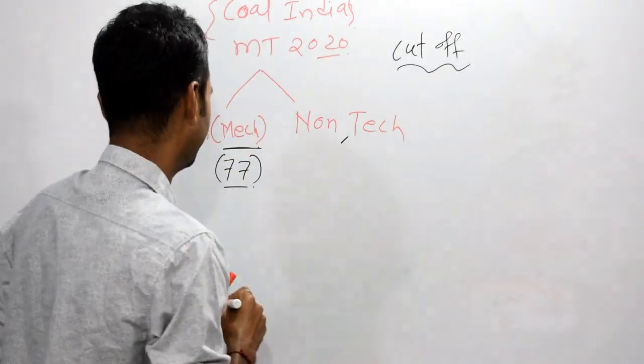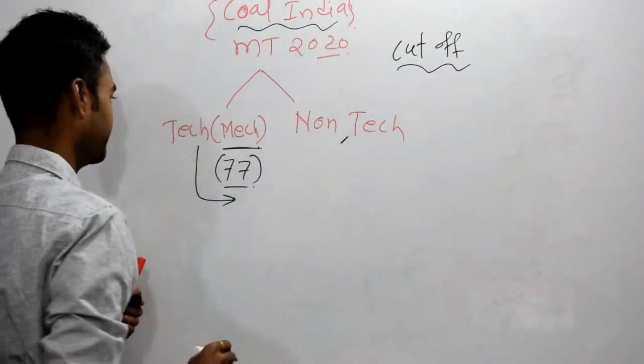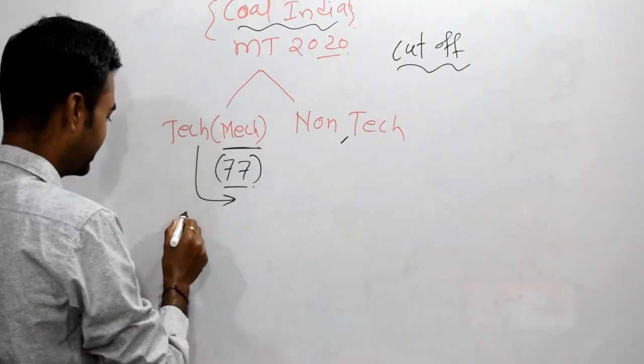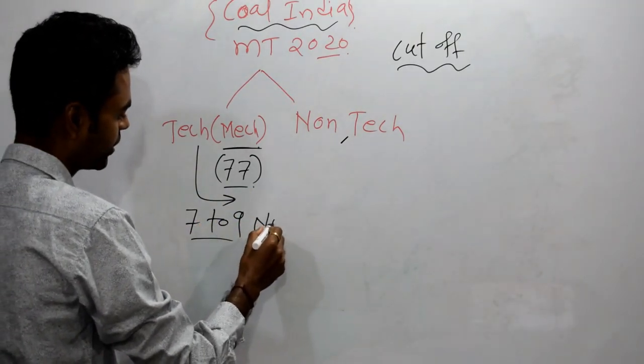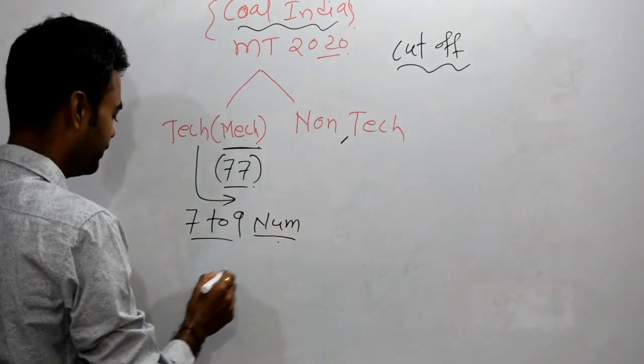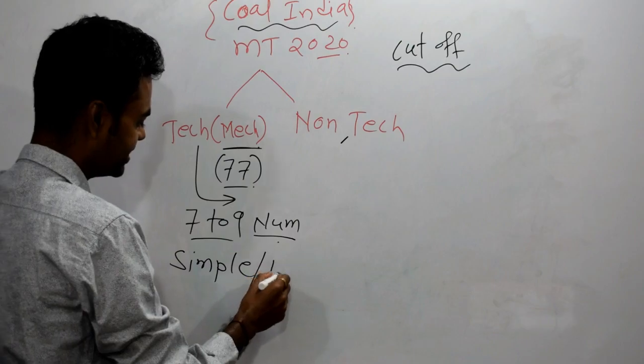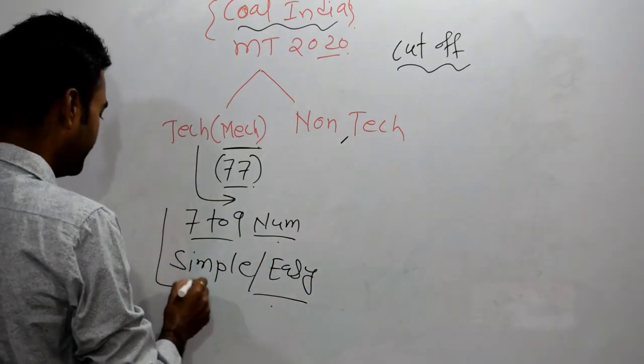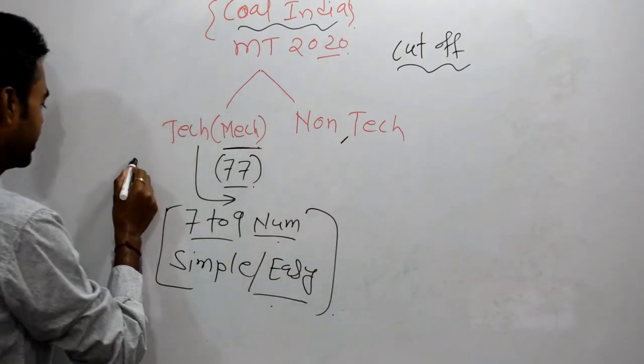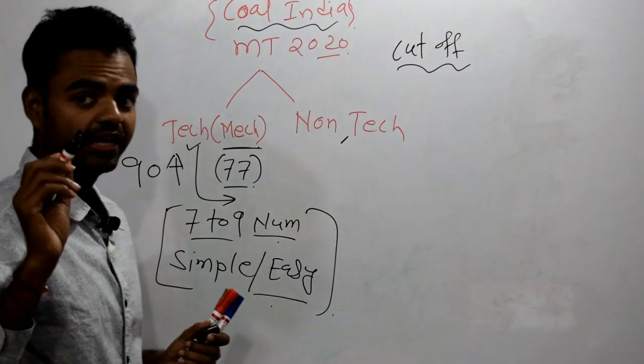First, let's talk about the examination, Coal India. In Mechanical, they have 7 to 9 numerical problems. Level of the paper is simple. Everybody is saying it's easy. Few of my students are scoring above 90 from this paper.